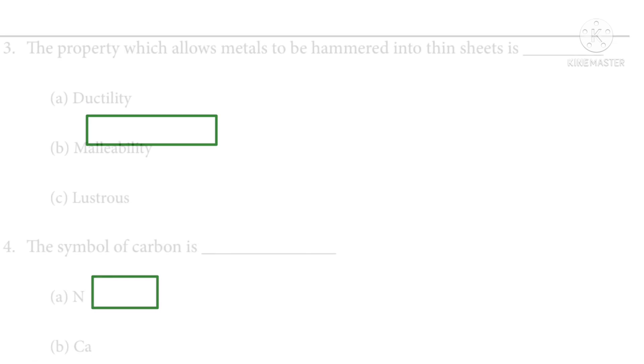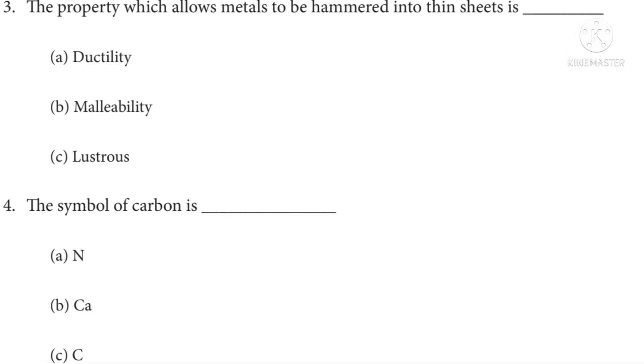Third question: the property which allows metals to be hammered into thin sheets is dash. Options A: ductility, B: malleability, C: lustrous. Answer B, malleability.